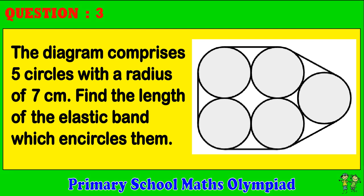Question 3. The diagram comprises five circles with a radius of 7 cm. Find the length of the elastic band which encircles them.